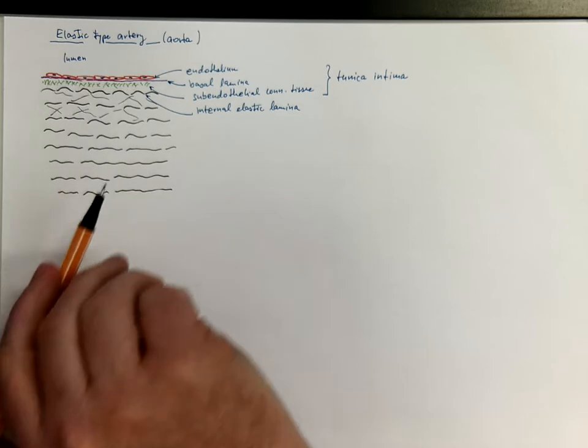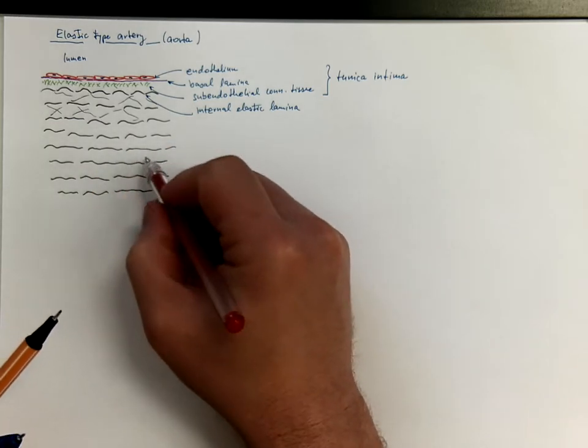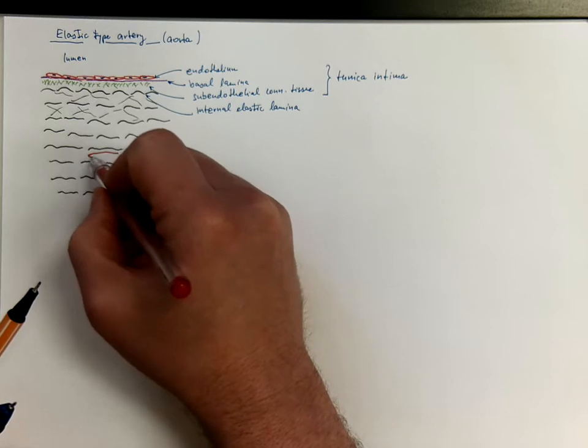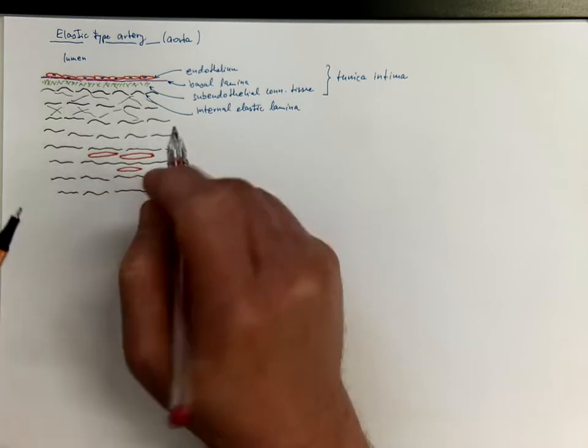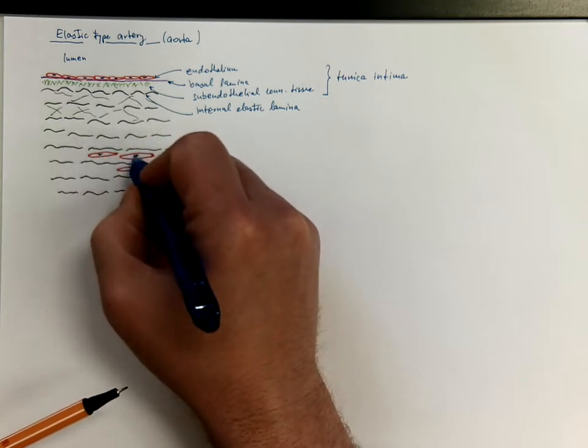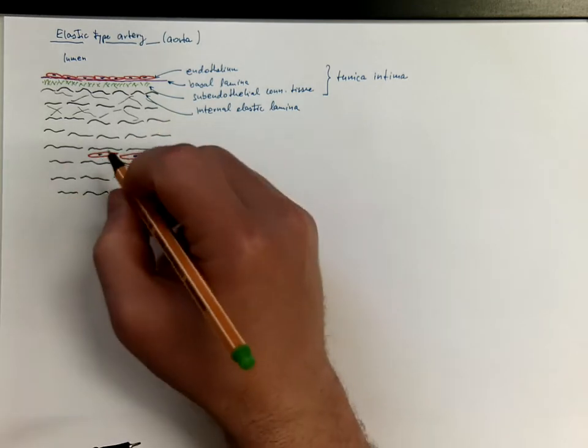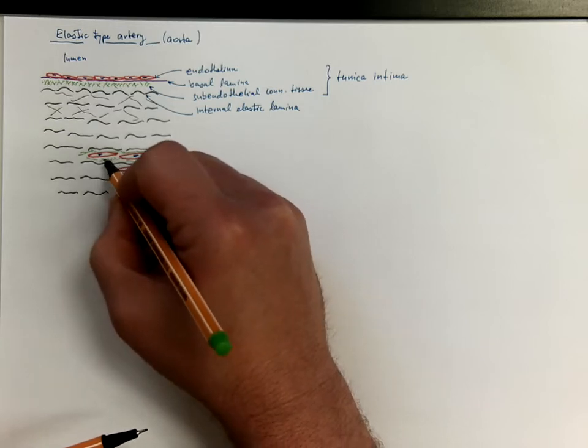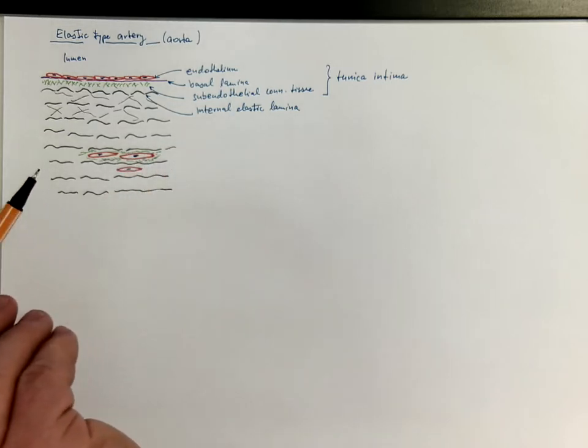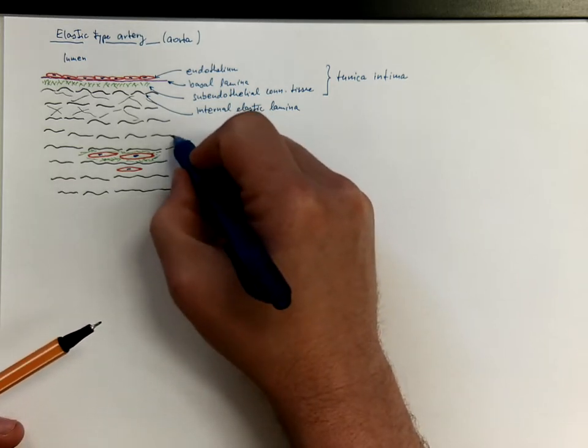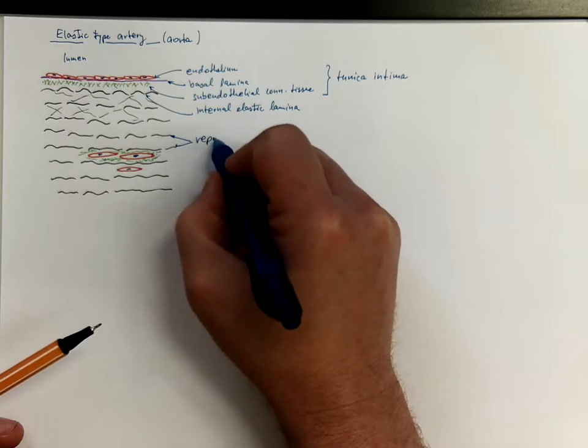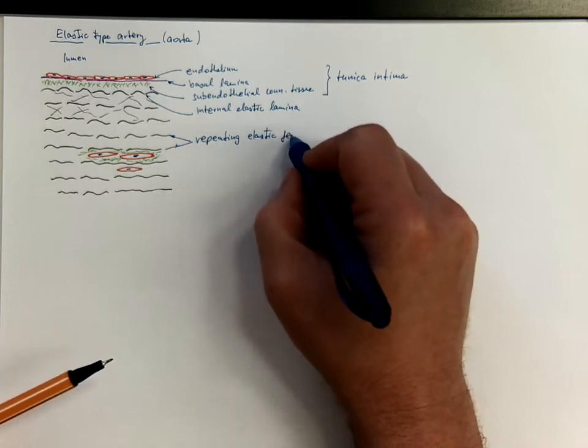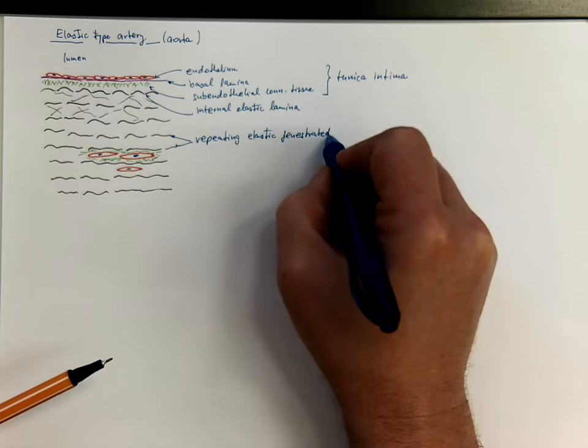And the pattern that is repeating here is two elastic membranes and the smooth muscle cells, vascular smooth muscle cells in between, that are also surrounded by the type III collagen and the ground substance of the vascular extracellular matrix, mainly glycosaminoglycans. So you got the pattern of repeating elastic fenestrated membranes.